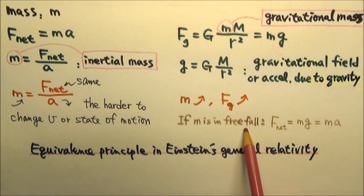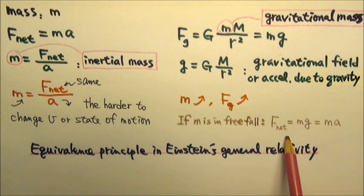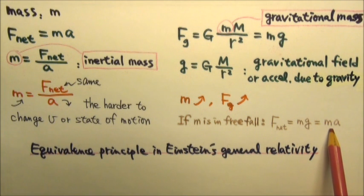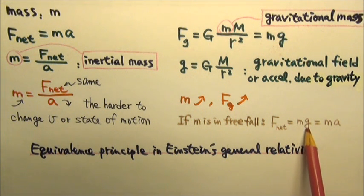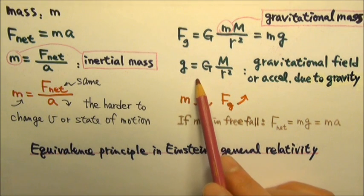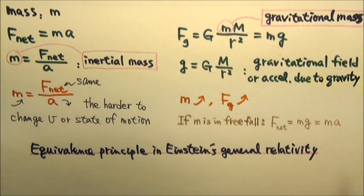If we let an object go into freefall, mg would be the net force on the object, and net force equals ma. The two same m's cancel, so the little g equals acceleration a. The little g is the gravitational field. It is also the acceleration due to gravity.